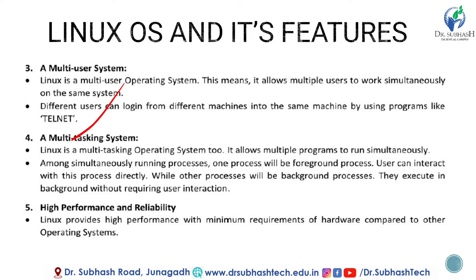The fourth feature is that Linux is a multi-tasking system. Linux allows multiple programs to run simultaneously. Among simultaneously running processes, one process will be a foreground process that the user can interact with directly, while other processes run as background processes without requiring user interaction. Both Windows and Linux are multi-tasking operating systems, but they implement multi-tasking in different ways.